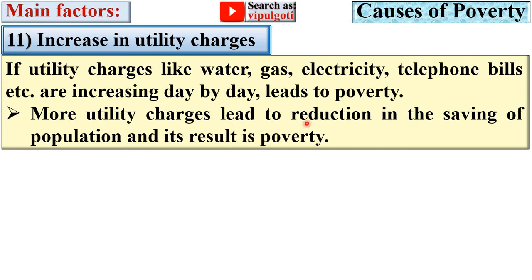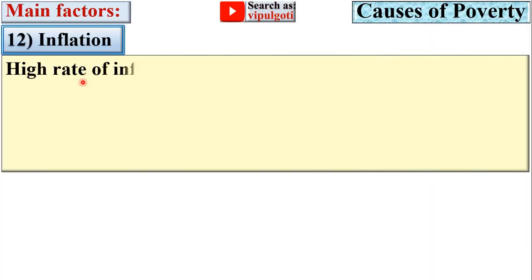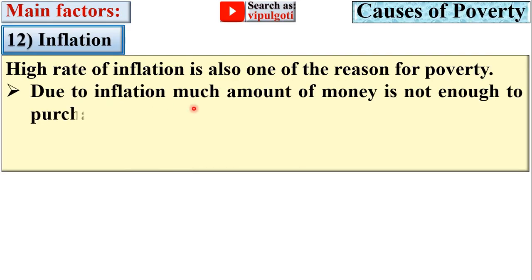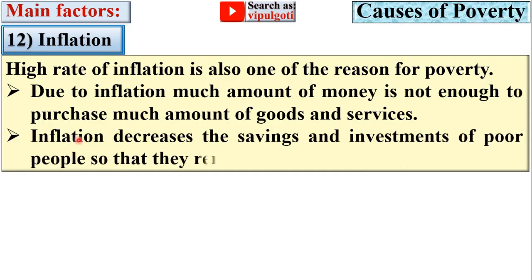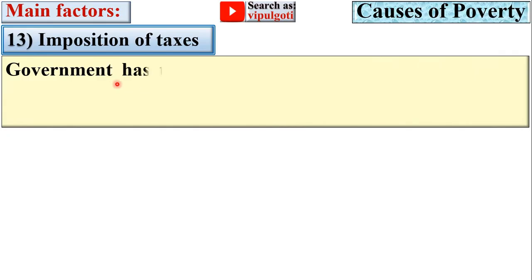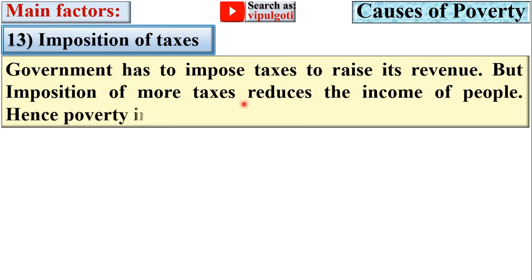Next, inflation. High rate of inflation is also one of the reasons for poverty. Due to inflation, a large amount of money is not enough to purchase goods and services. Inflation decreases the savings and investments of poor people so that they remain poor. Next, imposition of taxes. The government has to impose taxes to raise its revenue, but imposition of more taxes reduces the income of people, hence poverty increases.